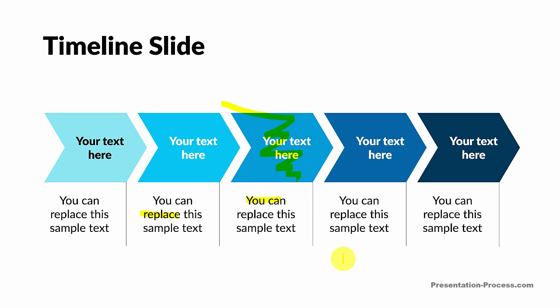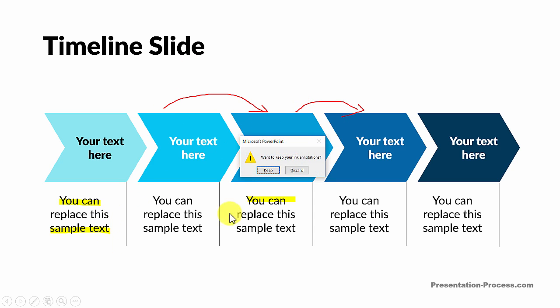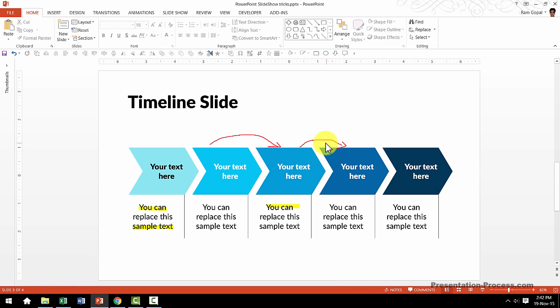So those are the 4 simple PowerPoint slideshow tricks that help you present your slides in a much better way. The best part is, once you are done with your drawing and highlighting, when you press Escape, PowerPoint will ask if you want to keep your ink annotations. When you say keep, PowerPoint saves those ink annotations for future reference.